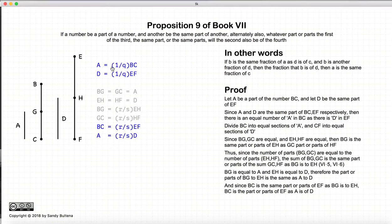So to recap, if A and D are equal parts of BC and EF respectively, then if BC is a certain part of EF, AD will be the same part or parts of D.